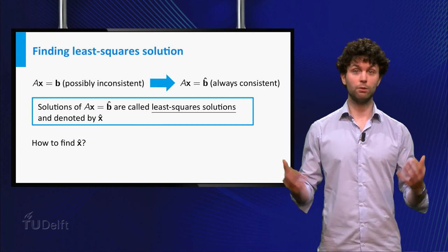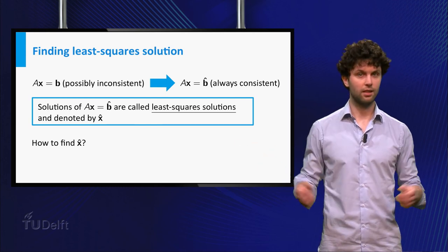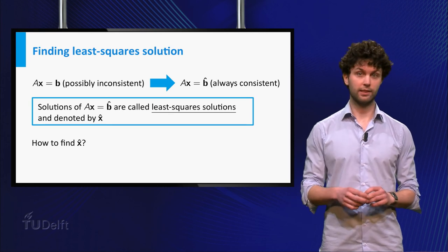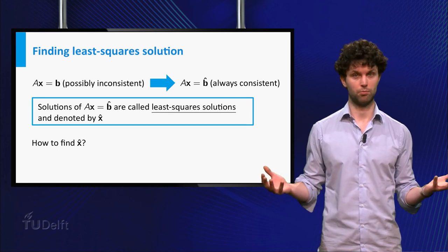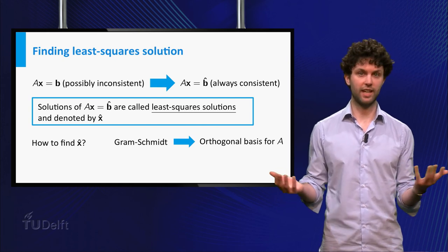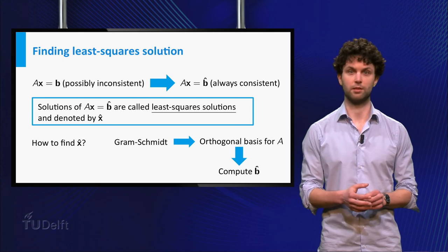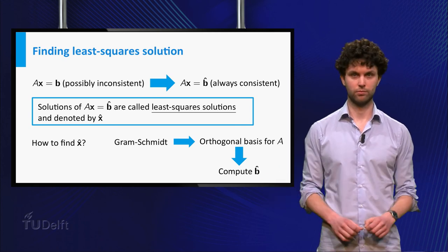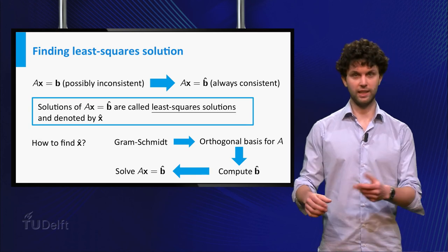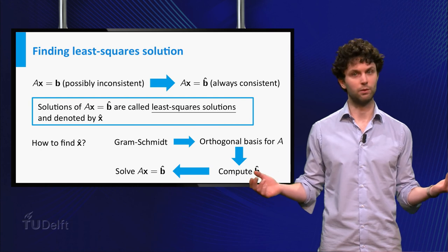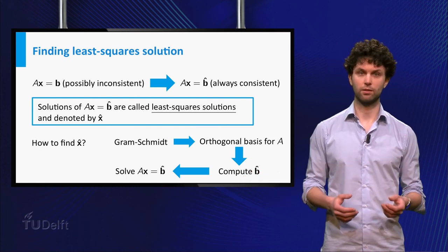The remaining question is, how do we compute x-hat? Well, using the knowledge you have obtained in the previous lectures, you can solve this problem. You could construct an orthogonal basis of the column space of A, and then compute the orthogonal projection b-hat of the vector b on the column space of A. Once you have computed b-hat, you could solve the consistent system A times x is equal to b-hat by means of the method of row reduction.